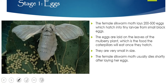You can see that they are really small in size. Interestingly, the female silkworm moth usually dies shortly after laying her eggs — she lays her eggs, and then that's it, her job is done.